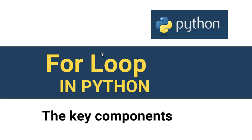The for loop is a feature in Python that allows us to do repetitive tasks. It is essential in processing data or files. We can use a for loop to iterate through a file or a list.